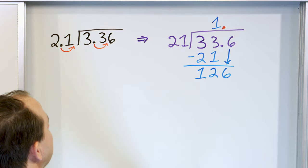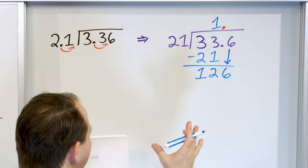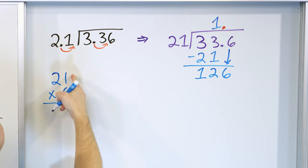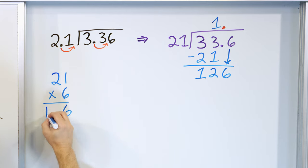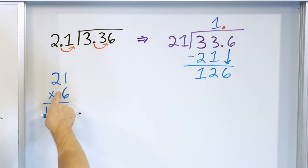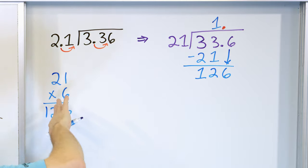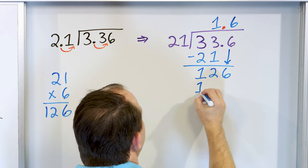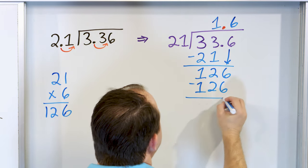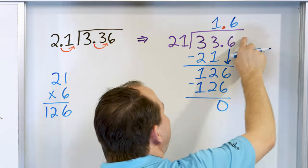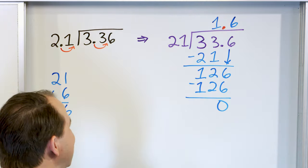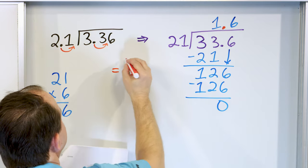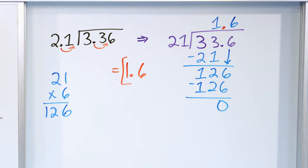I'm not sure what to pick, so let's go off to the side. 21 times 6: 6 times 1 is 6, 6 times 2 is 12 — I get 126. You might start with 5 or 7, but eventually you'll figure out the closest is 6. So it can go 6 times, giving 126. Subtracting — zero. The remainder is zero and there are no more digits to drag down, so the process can be stopped. The answer is 1.6.